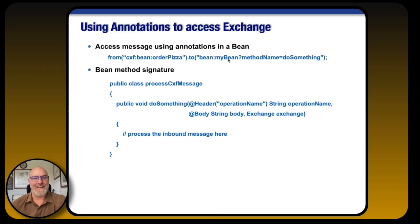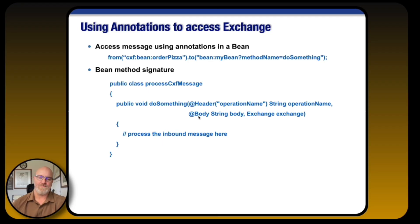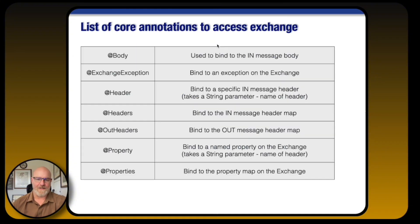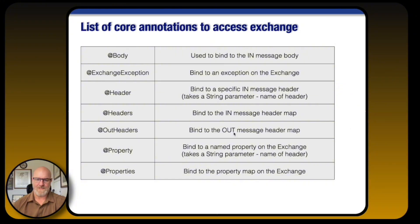Let's look at how we use annotations to access portions of the exchange. Here we're looking at a bean — just a basic bean — and in Camel we're referencing it via the bean component and calling the method 'doSomething'. That method says: I'm going to look in the header for an operation name and put it in the 'operation' parameter, and then bring in the body. Here's a quick list of core annotations: body, exchange exception (useful when processing errors), header, headers within the in message, out headers from the out message, and then properties and property.